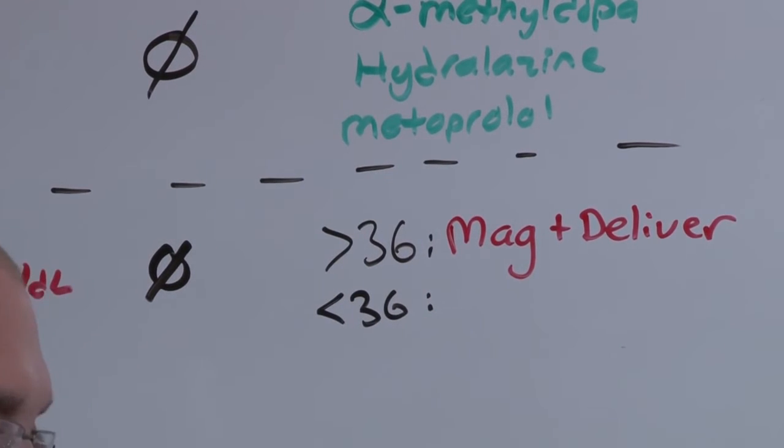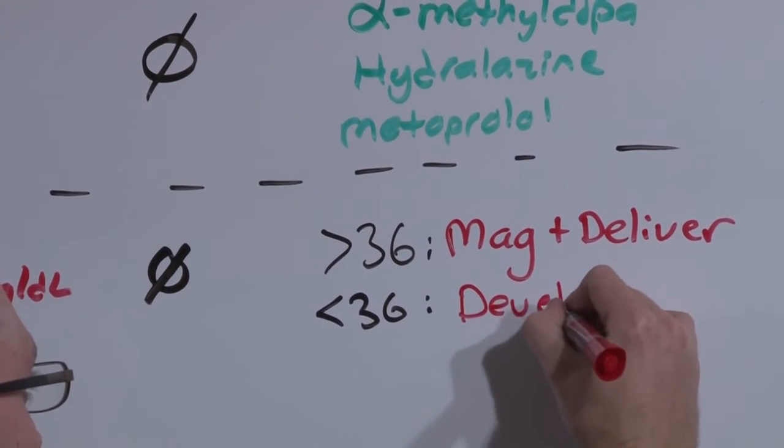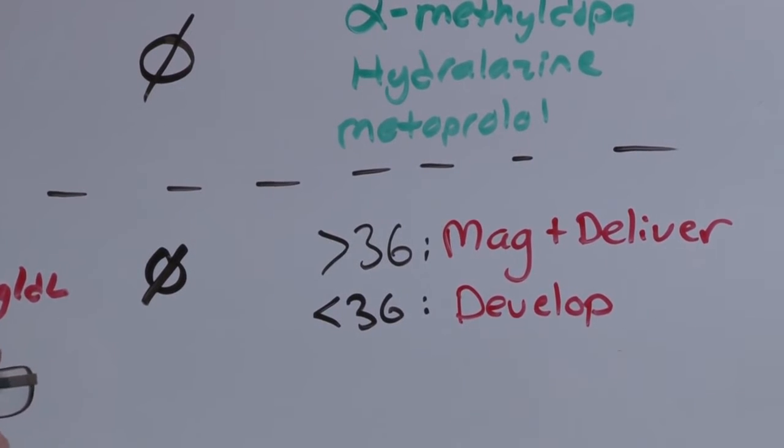If less than 36 weeks, now you have to weigh the risk benefit. You're probably going to let baby develop. But if she shows any sign of clinical worsening, mag and deliver.